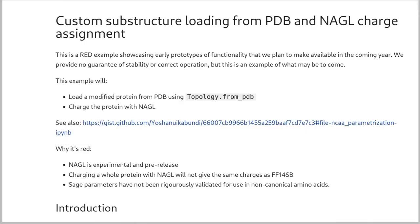This last notebook is red, because we're going to use NAGL in a place that it's definitely not appropriate — charging a full protein with a non-canonical amino acid. One day NAGL will be part of our force fields and this will be extremely appropriate. This is one of the reasons we're developing NAGL, so that we can seamlessly combine different chemistries into the same molecule. But at the moment, our protein force field uses AMBER charges, which are quite different to NAGL charges. The point is, even though this will not give you a self-consistent force field, it demonstrates how powerful this technique will be once we have a NAGL-compatible protein force field.